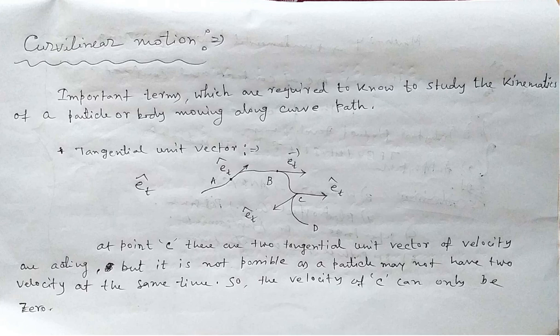We will cover the earlier chapter on curvilinear motion. Though it has been covered in an earlier video, it was not very clear, so I am repeating the chapter again. Curvilinear motion means when a particle or body moves along a curved path, the motion is called curvilinear. When a particle or body moves along a straight path, all particles belonging to the body will have the same velocity in the same direction, as well as the same acceleration in the same direction.